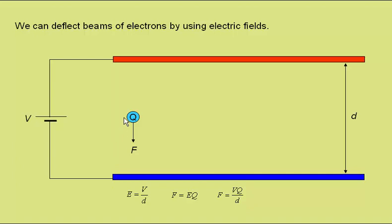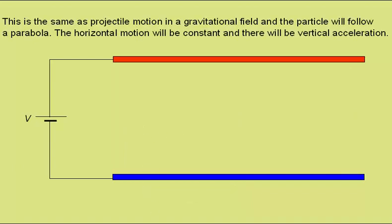So if the charge is moving to the right, like this, it will constantly experience the same downwards force F. This is the same situation as projectile motion in a gravitational field, and the particle will therefore follow a parabola, just like a projectile. The horizontal motion will be constant, and there will be vertical acceleration. So our charge will follow a path something like this.